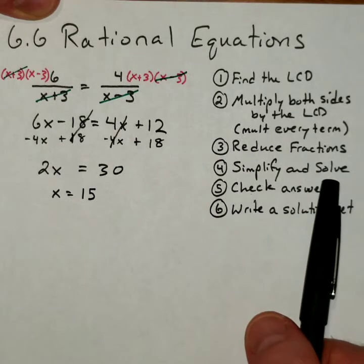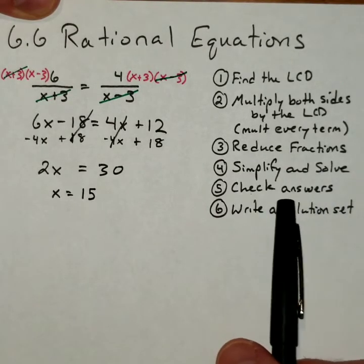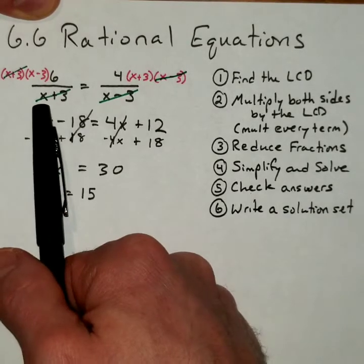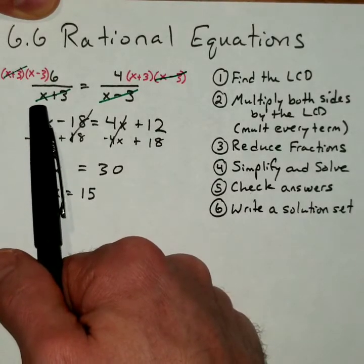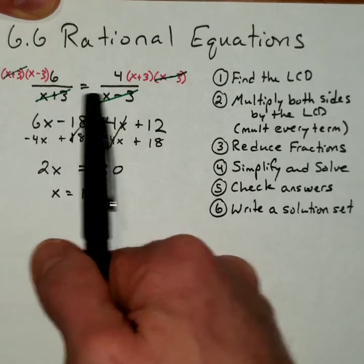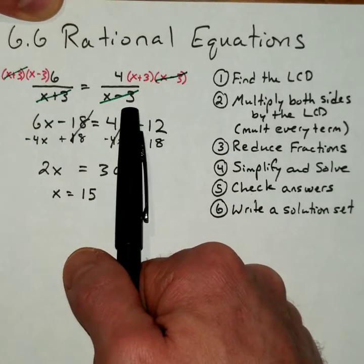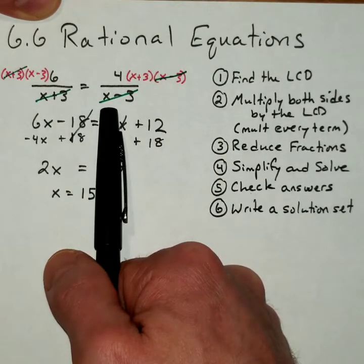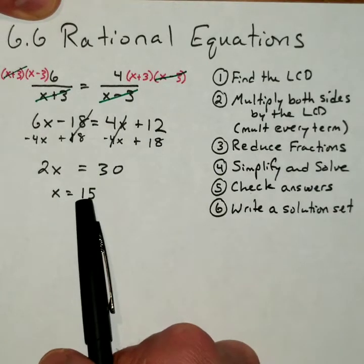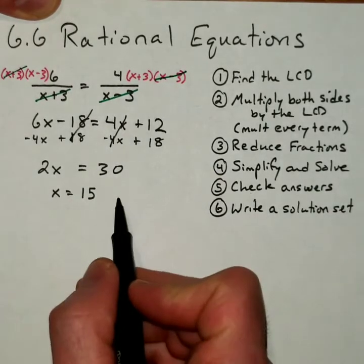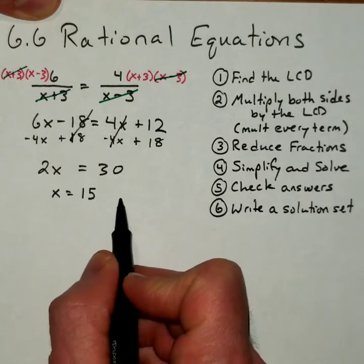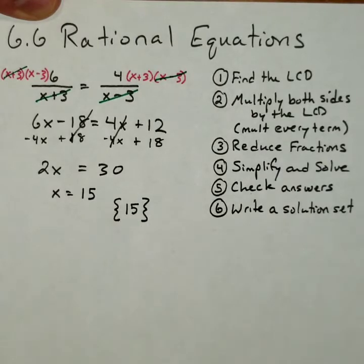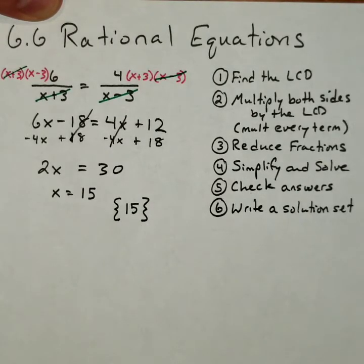Okay, so I just took care of the solve portion. Then we're going to check our answers. In this case, we only have one answer. And when I check it, back in the original, put a 15 in there. 15 plus 3 is 18, 15 minus 3 is 12. Neither of those equals 0. And as long as they do not equal 0, we can use the 15 as a solution. So in this case, our final answer is going to be the solution set, which is a set containing 15.